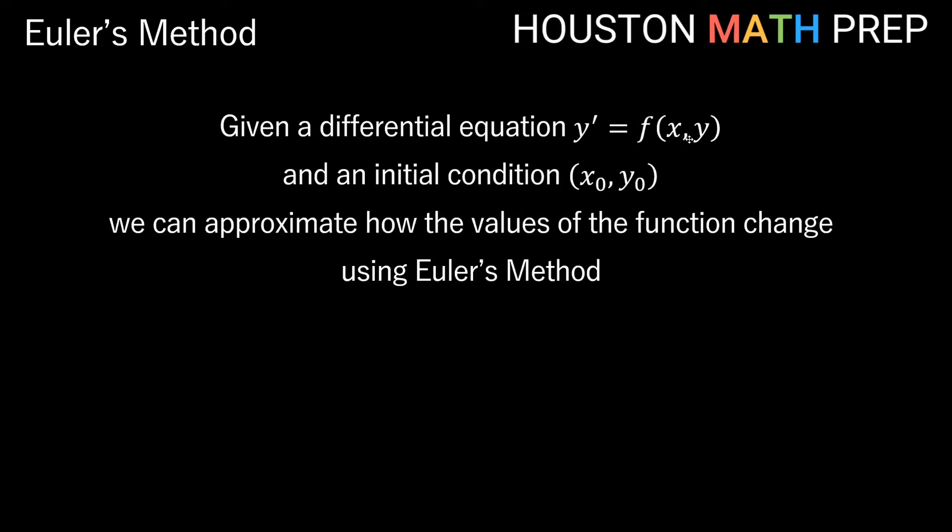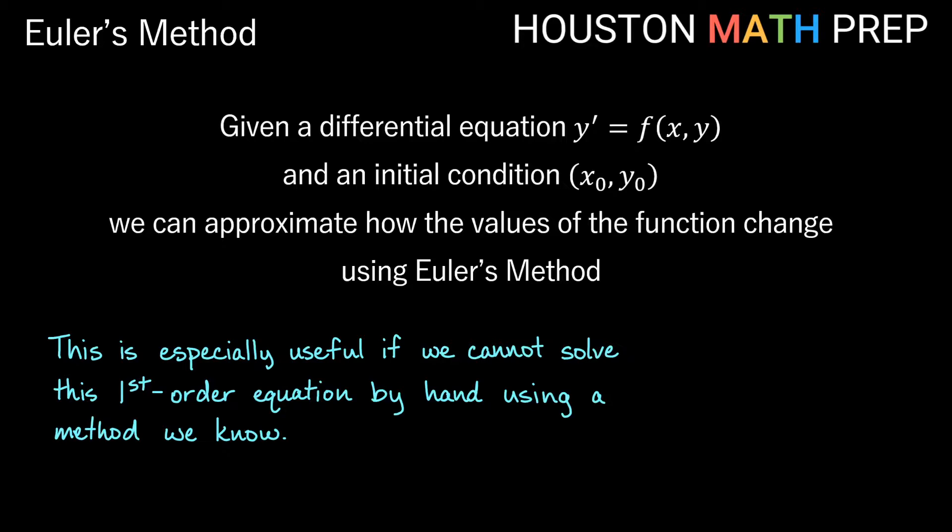So this y' equal to f of x,y is just telling us that we have some equation in the right hand side, may have some x's in it, may have some y's in it, it may have both, but we have this expression for the first derivative, which tells us about how the function is changing as we move to the right on the solution curve. Doing a numerical approximation like Euler's method is going to be especially useful if we can't solve the first order equation by hand using some method we know.